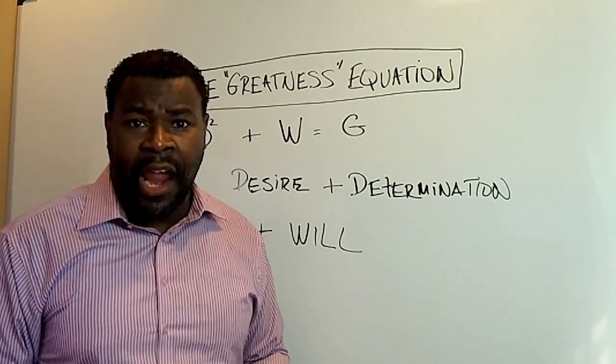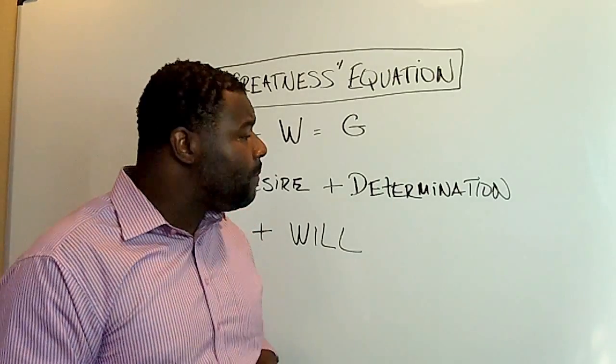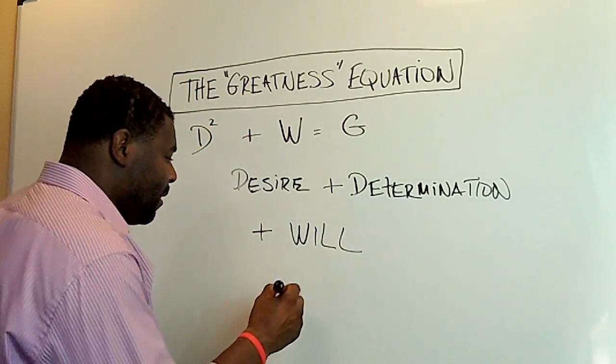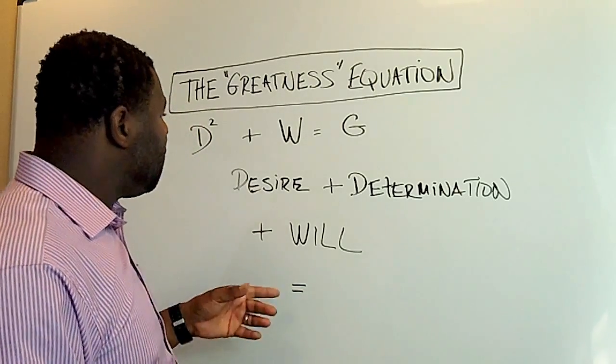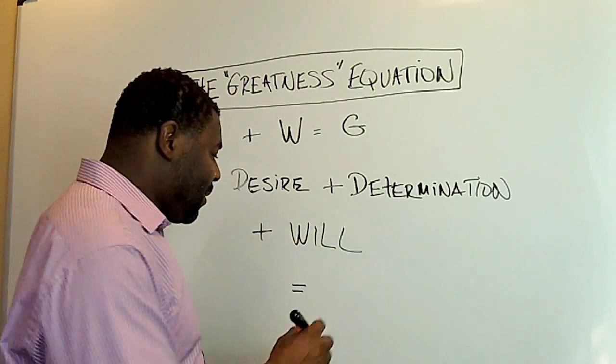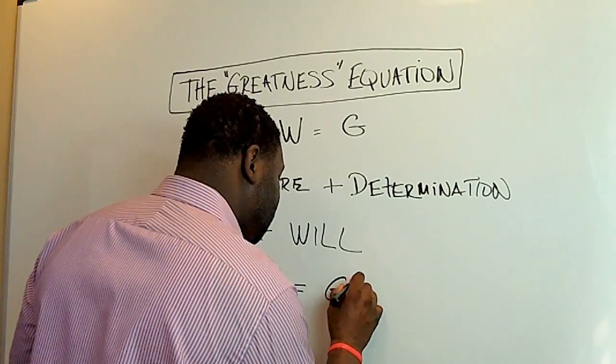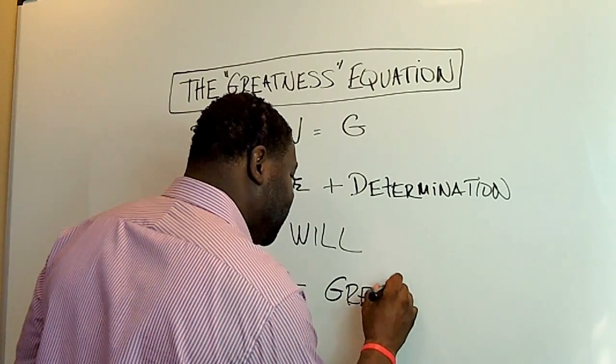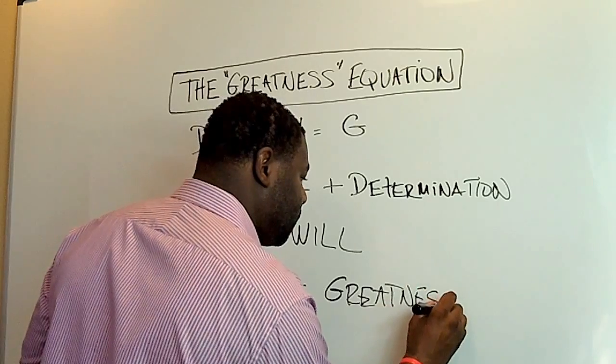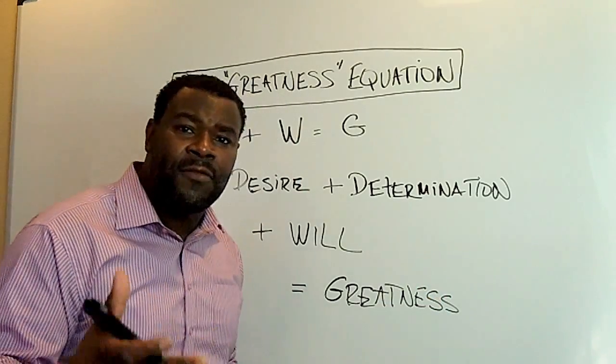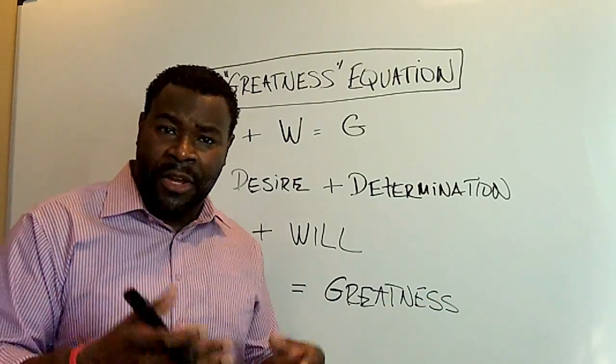You have to have desire, determination, and will. So when you have all that, D squared plus W, then you find your greatness. Then you find your absolute greatness.